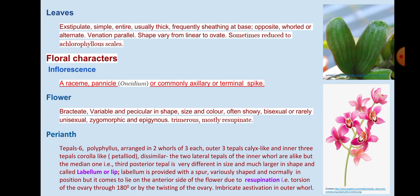Floral Characters. Inflorescence: A raceme, panicle, or commonly axillary or terminal spike. Flower: Bracteate, variable and peculiar in shape, size, and color. Often bisexual, or rarely unisexual, zygomorphic, and epigynous. Trimerous mostly.